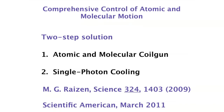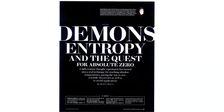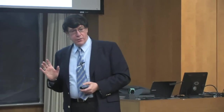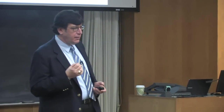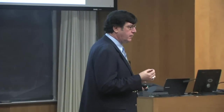Putting these together, I claim we have a two-step solution that is quite general: the atomic/molecular coil gun and single-photon cooling. This was published in an invited review article in 2009, which I talked about three years ago. Since then I published a more popular version downloadable from the group's website — I wrote everything except the title, which they rewrote, because 'demons' attracts readership. This clearly breaks the barrier of generality of laser cooling.